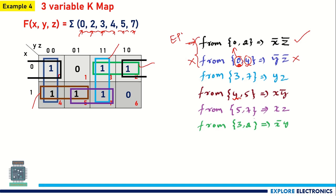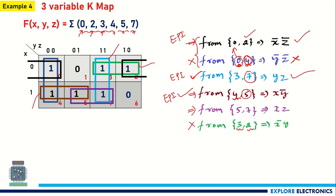Looking at the third expression Y·Z, it covers cells 3 and 7. Cell 3 is also covered elsewhere and cell 2 is already in the first expression. So I keep this as a prime implicant and neglect a redundant term. For expression X·Ȳ covering cell 4: looking at the next expressions, there is no other coverage of 4 since I neglected the Ȳ·Z̄ expression. So this becomes an essential prime implicant. These three are my essential prime implicants.